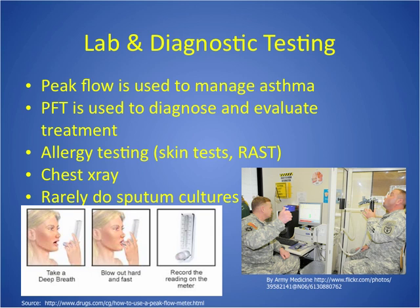Allergy testing includes the skin test. RAST is a blood test oftentimes done in small children who couldn't tolerate skin testing. Chest x-ray is sometimes done with an acute attack, especially if it's unclear what caused it — to make sure there's not a pneumonia or something infectious, and to rule out other things that look like asthma. For example, if they inhaled a foreign object like a coin, that could cause similar symptoms. There's no need to do sputum cultures generally in a patient with asthma since it's not usually an infectious process — so on a test question, the answer will never be sputum cultures.